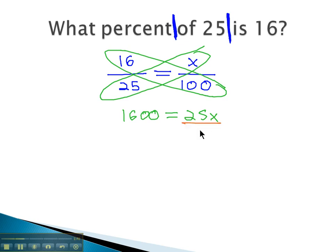Finally, to solve this equation for x, we'll simply divide both sides by 25, and find out that x is equal to 64. Putting a label on it, x is equal to 64 percent.